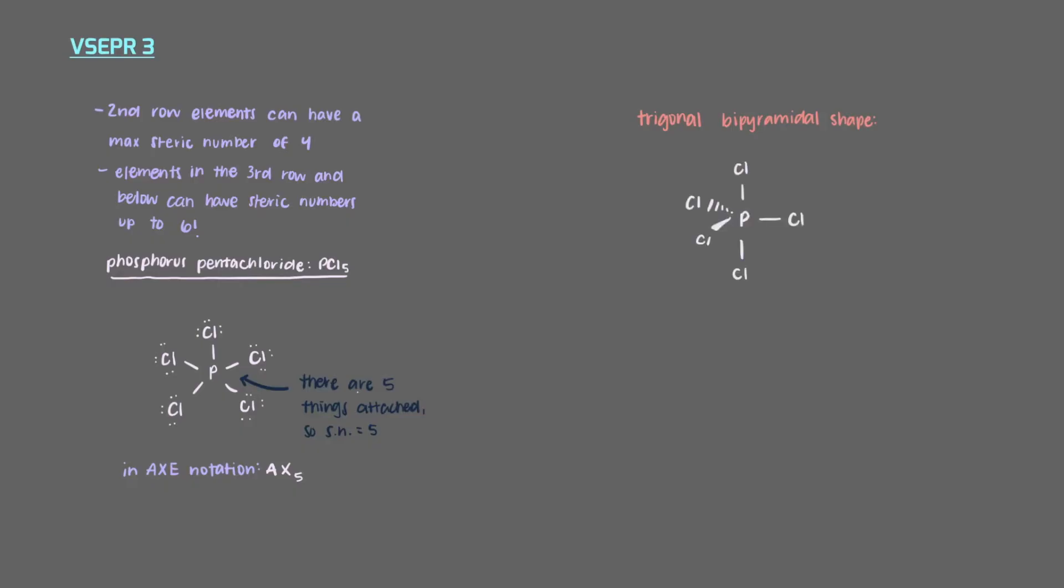In this molecule, there are two types of chlorines. Imagine that the phosphorus is at the center of Earth. Two of the chlorines would be at the two poles, one on top at the north pole and one on the bottom at the south pole. These are the two axial chlorines.